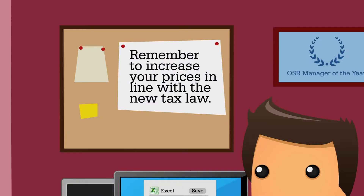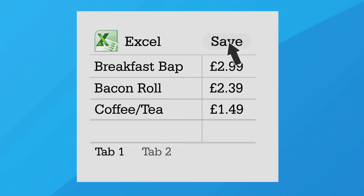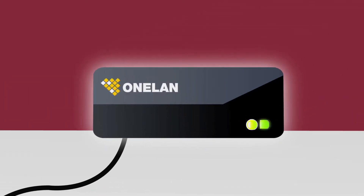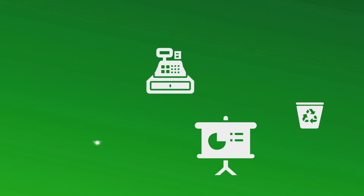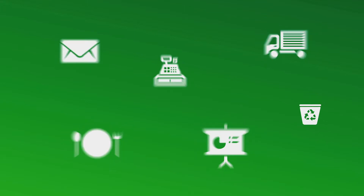So now, when you need to alter your prices to adhere with the new food pricing tax, for example, simply update your Excel document and click save. In an instant, all your menu boards have been updated, leaving you more time to focus on other key areas of the business.